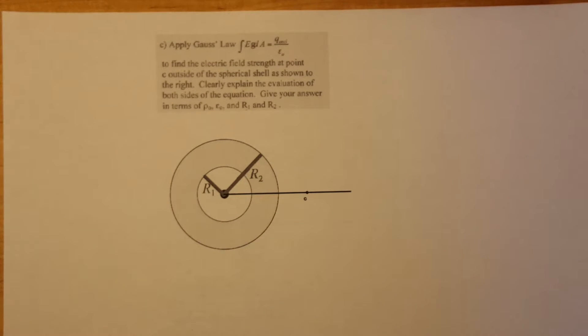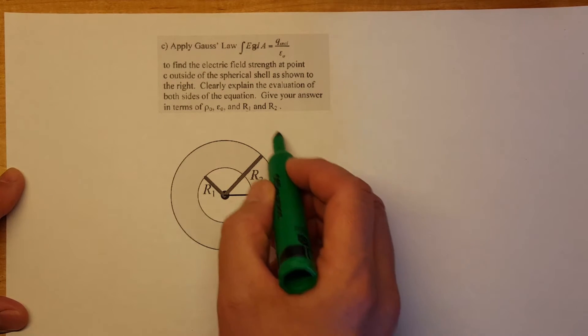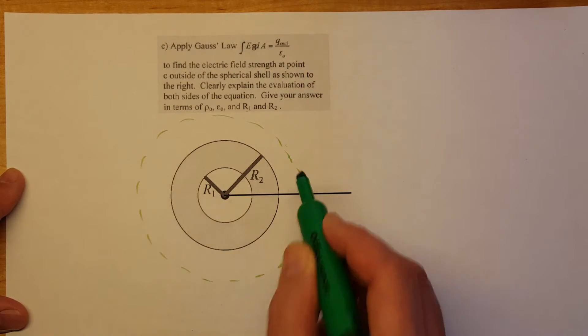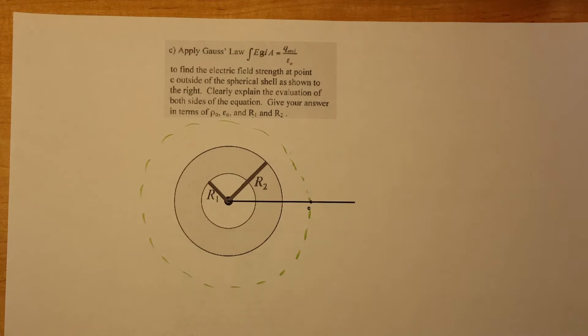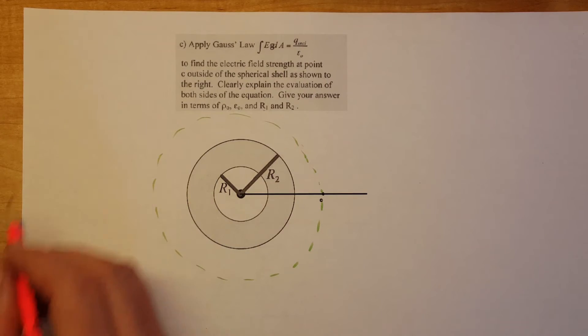So we're going to start by applying and drawing our Gaussian surface which will be a nice symmetric sphere around our material. And we're going to start by writing Gauss's formula.